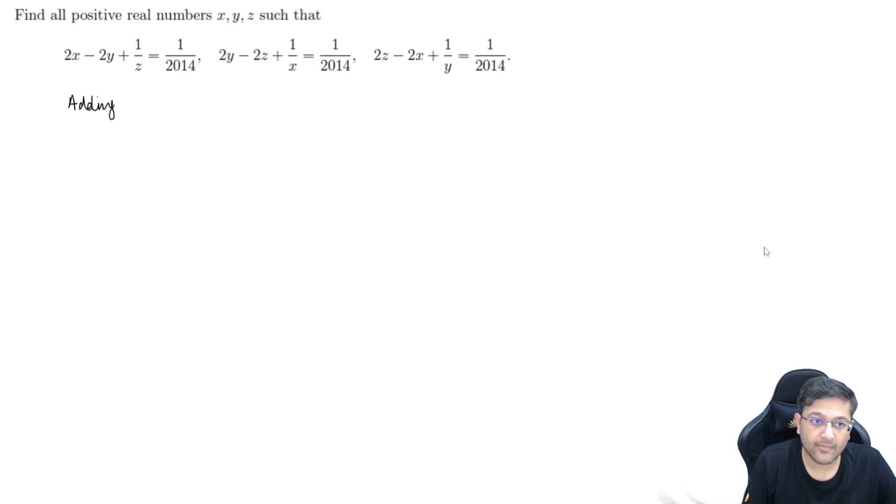But you will get adding all three, you get 1 upon x. On the left hand side, you will be left with 1 upon x plus 1 upon y plus 1 upon z will be equal to 3 times 1 upon 2014. Right. This is what you are left with.